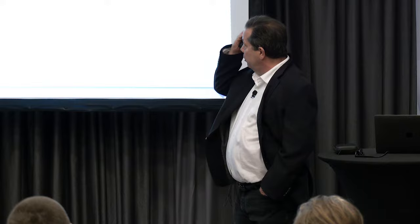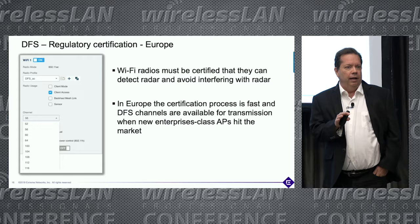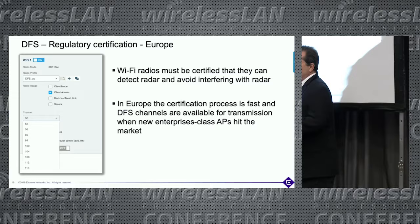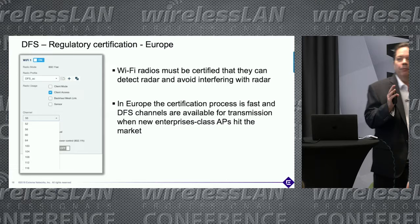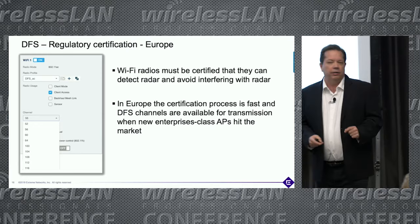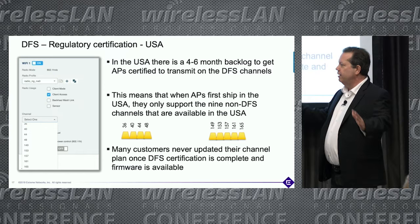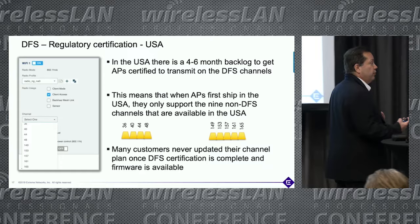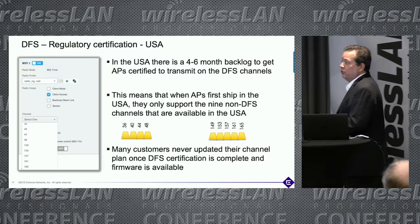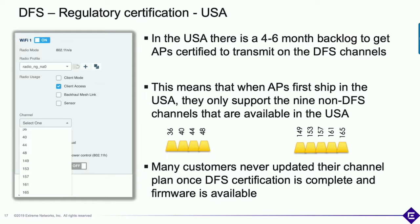In Europe, when your APs get certified to transmit in the 5 GHz band, they also get certified for DFS at the same time. So when Extreme Networks releases a new AP in Europe, you can immediately start using the DFS channels. In the United States it's different — there are two rounds of certification. First you certify just to transmit in 5 GHz, then there's a separate DFS certification process with a three-to-six month backlog.